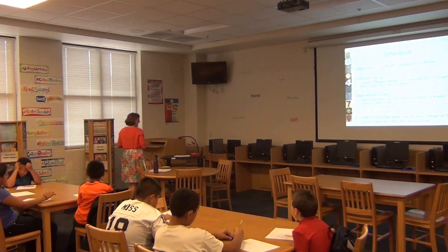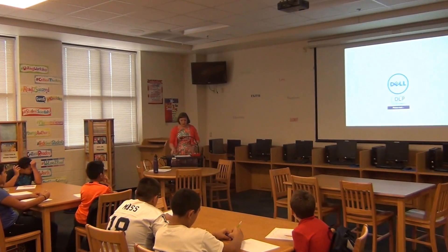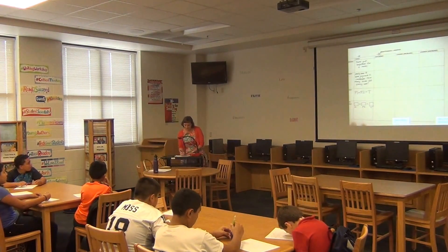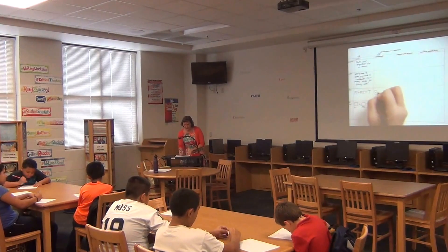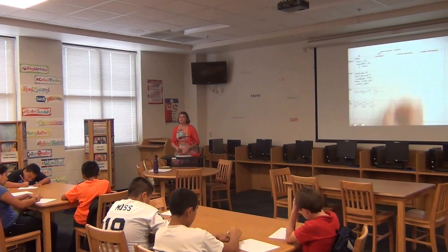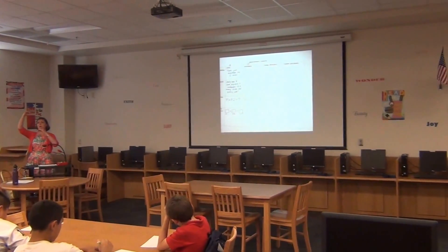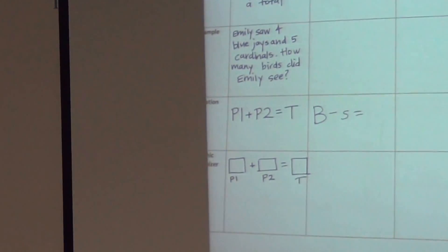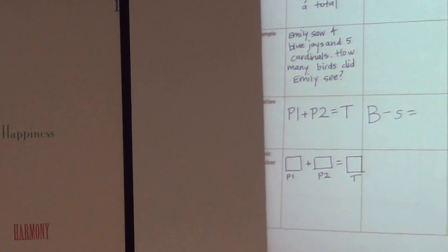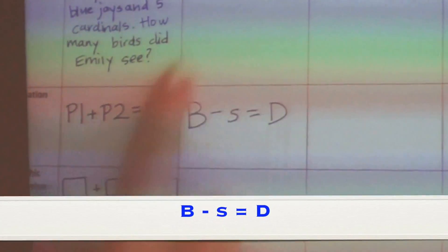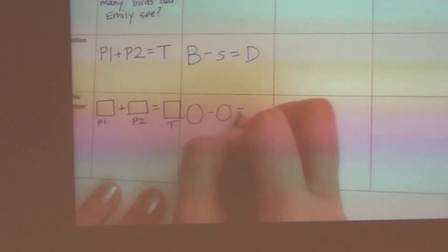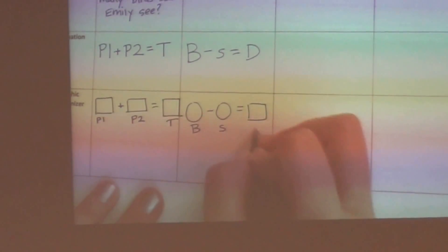We do have a difference equation and a difference picture that you can use. The difference equation: I have a bigger amount — I'm going to write a big B — and I'm comparing it, which means I'm going to subtract a smaller amount — I write a little S. When I compare the bigger and smaller amount, I'm comparing them for the difference. What letter could we use to represent difference? D. So B minus S equals D. I can also draw a picture: circle minus circle equals square. Bigger minus smaller equals difference.